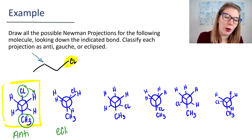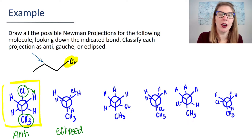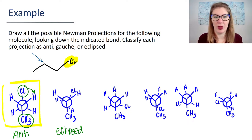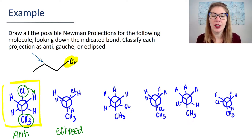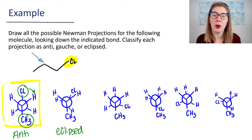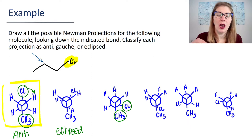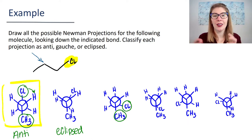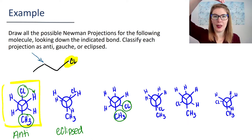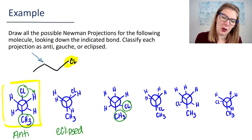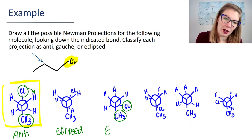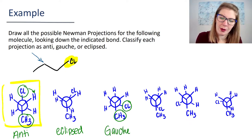The next conformation is showing eclipsed, where the groups are lining up with each other. The third conformation is another form of staggered, which is called gauche. Notice how the two big groups are still staggered with respect to one another, but they're not opposite like they are in anti—this is what we call the gauche conformation.